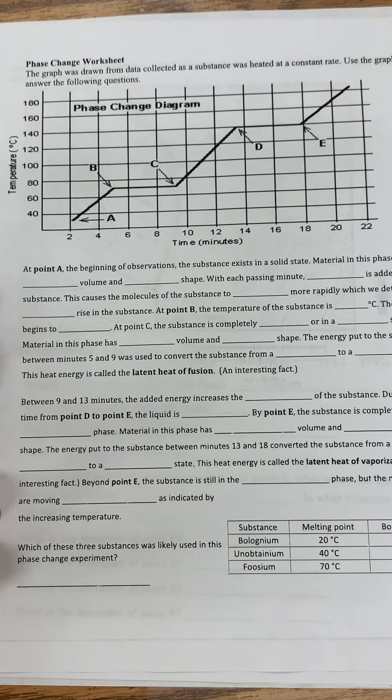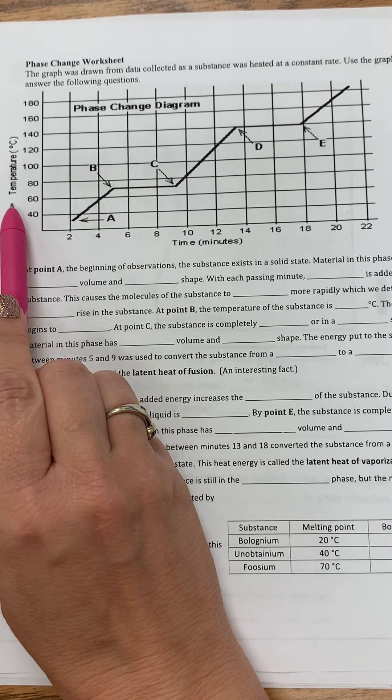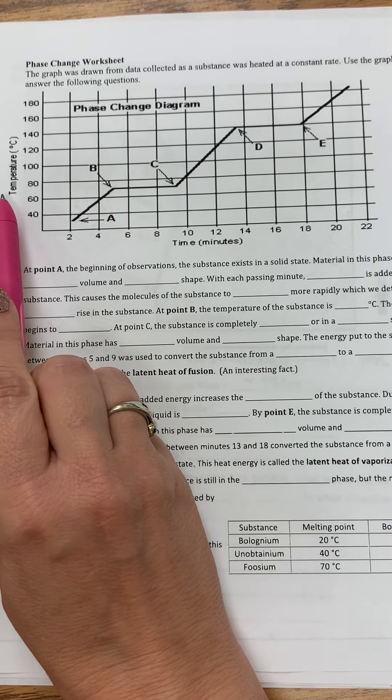Okay, for part of the lesson on the states of matter is looking at a phase change diagram. You can see here that this diagram here is temperature versus time. Sometimes here you will see heat or energy. So if it doesn't have time here, it has heat or energy.